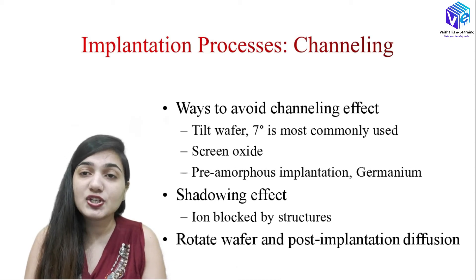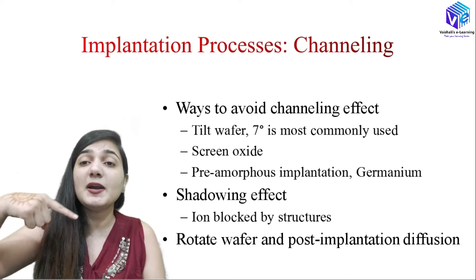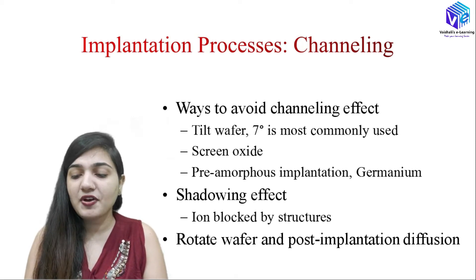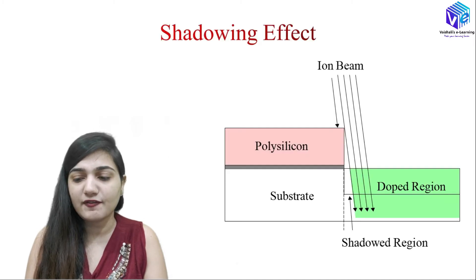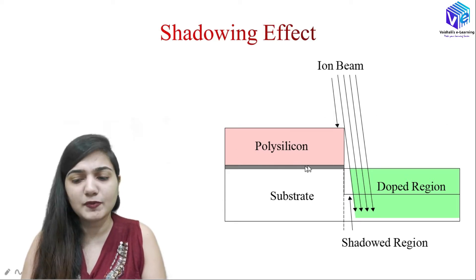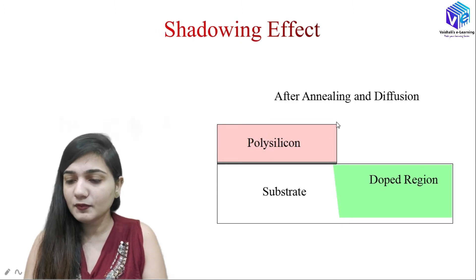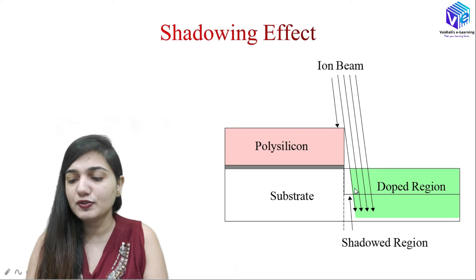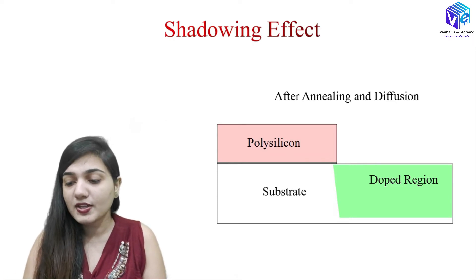Shadows are formed even if I change the angle. So what I told you in the channeling effect — I am changing the incident angle — but when I change the incident angle, the shadowing effect becomes predominant. To avoid it, I can rotate the wafer and use post-implantation diffusion. You can see in the figure: we have the polysilicon layer or the photoresist layer, the ion beam is coming and hitting the surface. At the seven-degree angle I mentioned, this is the shadowed region that is formed, so the doped region will not be complete — this part will be the shadowed region.